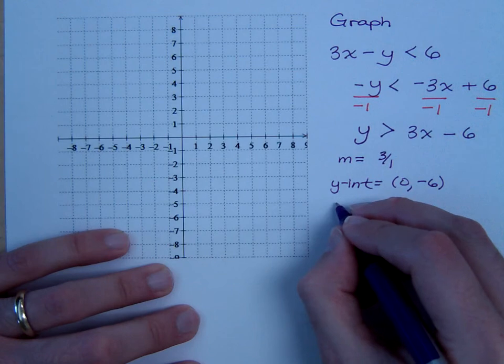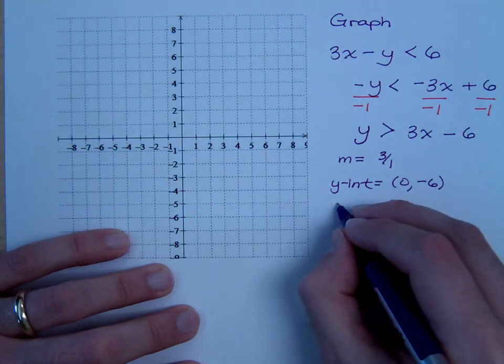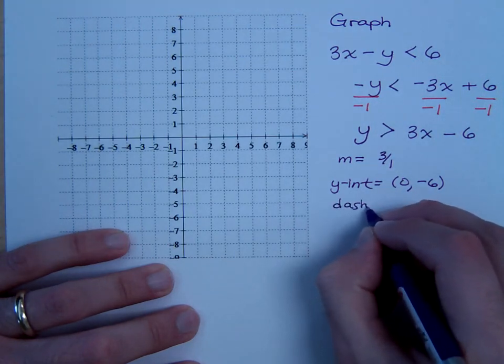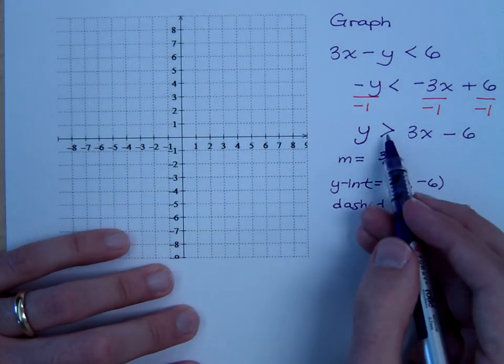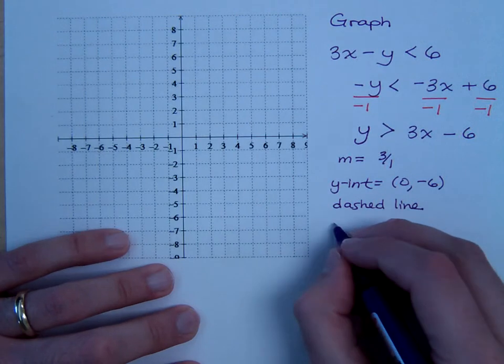Now, I think, Jennifer, you'd say it's what kind of line? What says it's a dashed line? Because of the greater than, but not equal to. And I'm going to shade where?